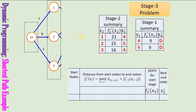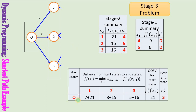The possible start state is the origin and the possible end states are 1, 2, and 3. If you go from node 0 to node 1, the objective function value is 21 plus 7. If you go from node 0 to node 2, the value is 8 plus 15. If you go from node 0 to node 3, the value is 5 plus 16. Starting from node 0, the best possible end state is node 3 and the optimal objective function value is the minimum of these three values.